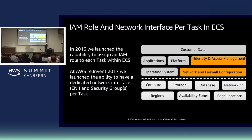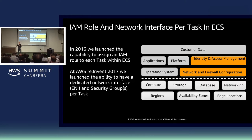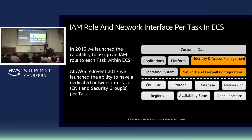The next question is: how do I isolate and secure my containers? Coming back to the shared responsibility model, we can talk about identity and access management. Since 2016, we launched a feature where you can attach IAM roles to your containers, to your tasks. This gives you fine granularity of security control for exactly that task. Traditionally, you would have an IAM role attached to an EC2 instance, meaning all containers on that instance would have access to all allowed AWS services — which is not a good practice. Since 2016, you can have a dedicated IAM role attached to each container.